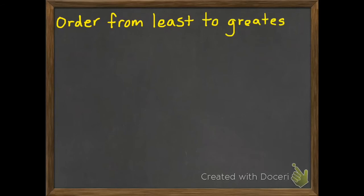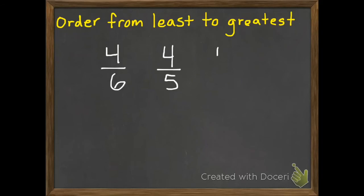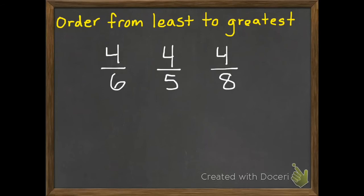You're also going to have some where you'll have 3 fractions. Instead of finding greater than, less than, or equal, you're going to order them from least to greatest. I think it gets a little trickier when you throw in a third number. We'll start with an easier one: 4 sixths, 4 fifths, and 4 eighths, and we want to put these from least to greatest. This one's nice because they all have the same numerator. If I have 4 pieces for each of these, and one's in 6 pieces, one's in 5, and one's in 8, the more pieces we have, the smaller those pieces are going to be. So if I want to find the least, I'd want to find the one that has the most pieces.